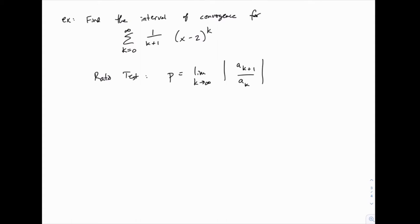So for this one we just need to find what's a_k, that's just whatever the expression is inside the series. Then for k plus 1 we just replace all the k's with k plus 1. So we get (k plus 1 plus 1), that's k plus 2, times (x minus 2) raised to the power of k plus 1.